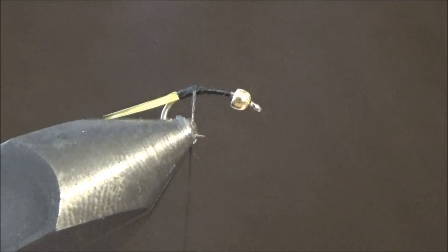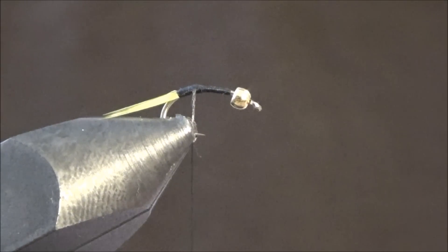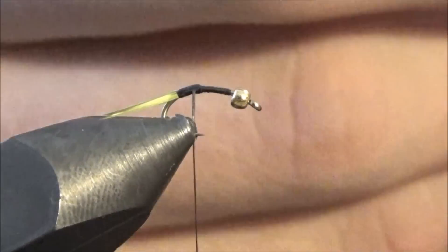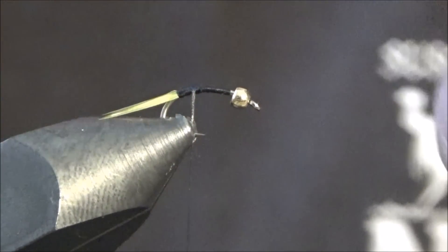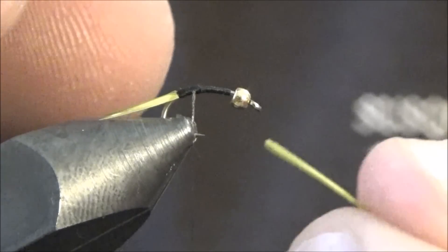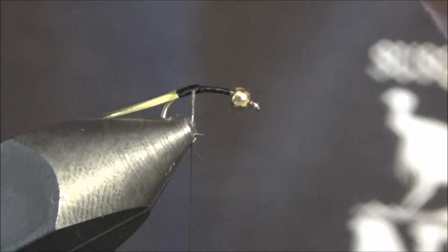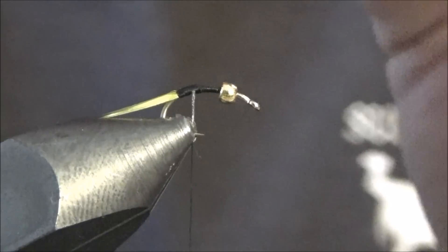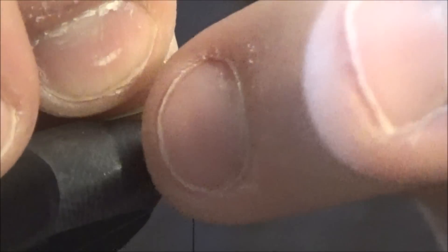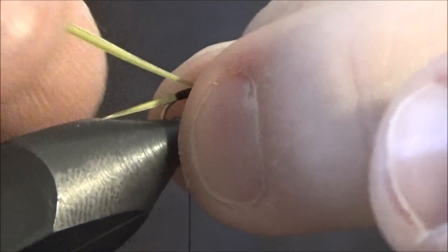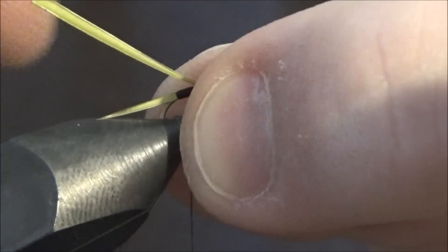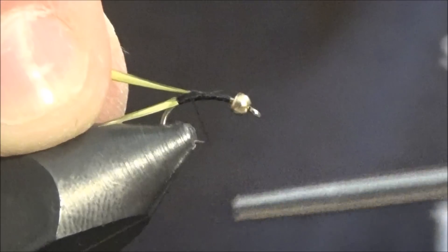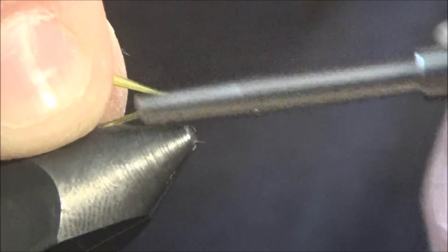Now you're going to take another biot, same color, preferably a longer one if you can find it. You got to work with these biots, play around with them, but you want to find the ridge. There's a ridge on the biot. They're more obvious on a turkey biot. I like to tie them with the ridge facing down. Just going to tie the tip in, take your thread back to those tails.